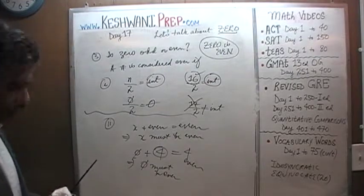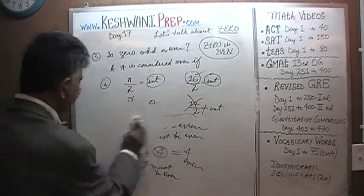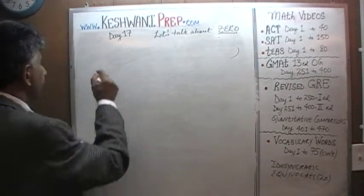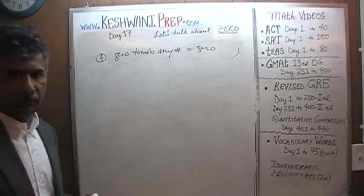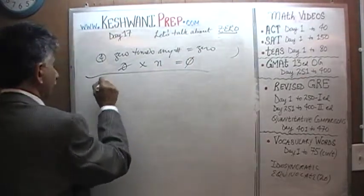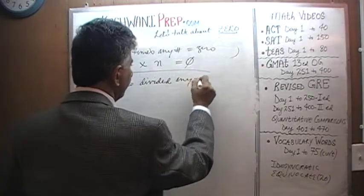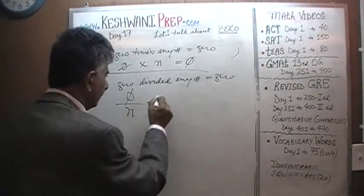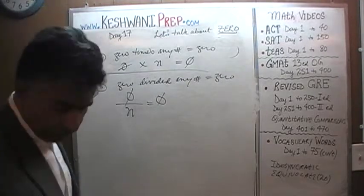Point number four is very straightforward: zero times any number equals zero. Similarly, zero divided by any number equals zero. If you have zero, it doesn't matter what number you divide it by — the answer is going to be zero. If you have a big fat zero and you cut it into however many slices you want, it's still zero.